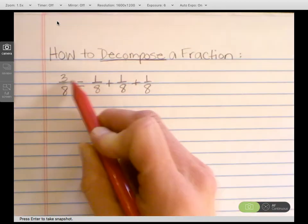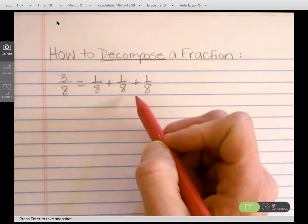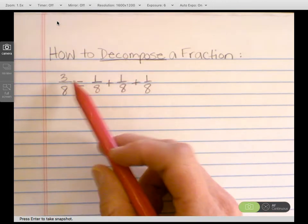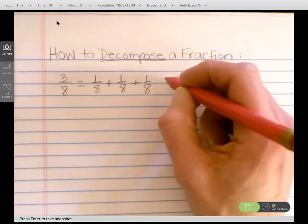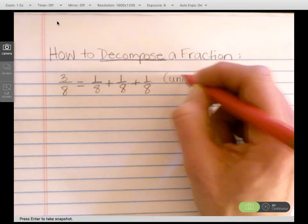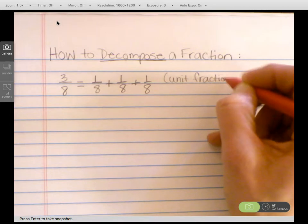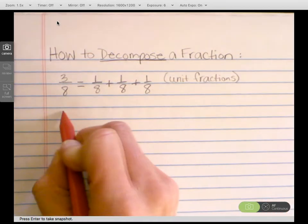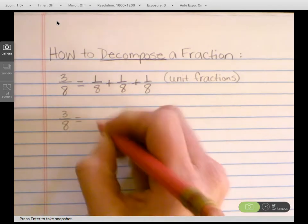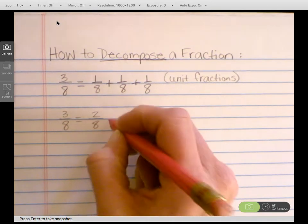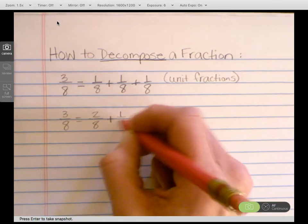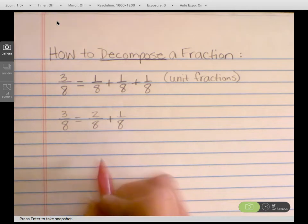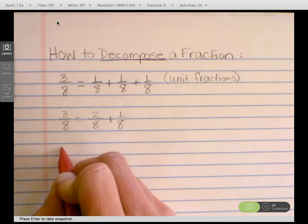Your numerators are added to equal 3. The denominator stays the same. So what I've done is broken this 3 apart, I've decomposed it, and this way uses unit fractions. Now there's more than one way to decompose a fraction. I could have chosen to break that apart with 2 eighths plus 1 eighth and still have 3 eighths. Another example would be to decompose the fraction 4 fifths.